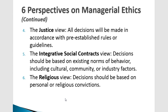The justice view holds that decisions will be made in accordance with pre-established rules and guidelines — you look at whether they're following the rules. If they are, it's ethical; if not, it's unethical. A problem with this view is that people can find loopholes that are unethical but not strictly against the rules. New rules must then be made to close those loopholes. If someone is determined to be unethical, they'll find a way; but a more ethical, moral person won't try to bend the rules to their advantage.